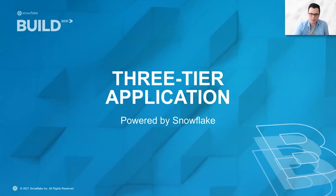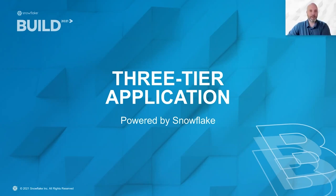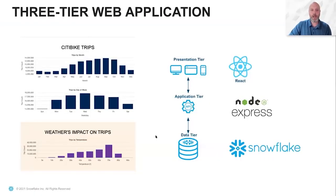I'm going to go through an example application — a three-tier web application, very similar to the traditional app diagram Daniel showed earlier. This is available on quickstarts.snowflake.com, so feel free to go download it and dig into the code. There are basically three tiers: a presentation tier that allows you to visualize data, an application tier that provides that data to the presentation tier, and the data tier. In this example, I'm using city bike data — a bike share program available in New York where you can rent a bike and take a trip. It's a very interesting data set with some very interesting trends we can show.